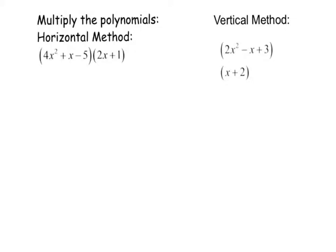In this slide we are going to multiply polynomials by using the horizontal and the vertical method. In the horizontal method I'm going to rewrite my polynomials as 2x, which is the first term of my second polynomial, times 4x squared plus x minus 5, and then plus 1 times 4x squared plus x minus 5.